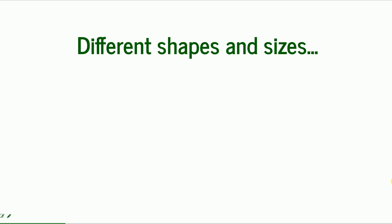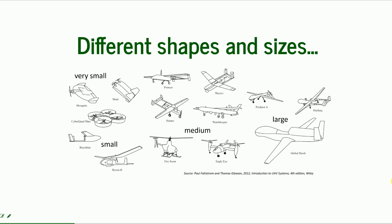First, the different shapes and sizes. You can see here how the airframe can be shaped totally differently, and some of them look really awkward. Some of them look like planes, some more like helicopters. This also shows the variety in sizes, and this picture is not scaled because it would be impossible — the mosquito or the skate would not even be visible if I kept the Global Hawk to scale. This is a huge aircraft that looks like an airplane. You would not even think of it as a drone, but like a regular aircraft.